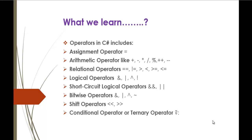Right now we will look into short-circuit logical operators. Short-circuit logical operators are the special versions of the logical operators AND and OR. The only difference between the short-circuit logical operator and the logical operator is that the logical operator evaluates both operands, but the short-circuit logical operator evaluates the second operand only when necessary. This is the main difference between them.